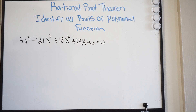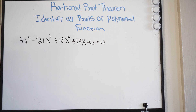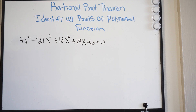You can try to factor, which in this case doesn't look like an option. You can try to use the quadratic formula, which again in this case is not an option. We can try to complete the square — again, not an option. So if you run into a problem like this, you're going to have to use the rational root theorem.